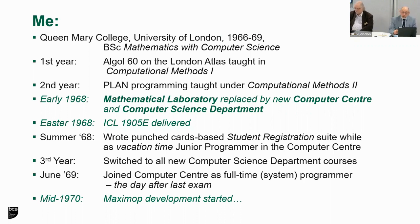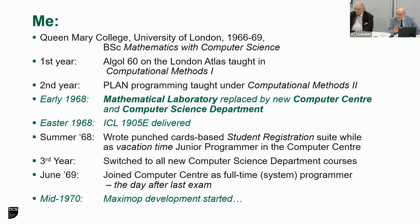That was in computational methods. Sometime early in 1968, what had originally been the mathematical laboratory — which was where the paper tabling, the Atlas was — was replaced by a new structure with a computer center for service delivery, and an academic computer science department, which was split in two. Quite honestly, they hardly ever spoke to each other again from that day onwards, but that was largely to do with personalities.